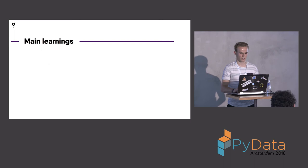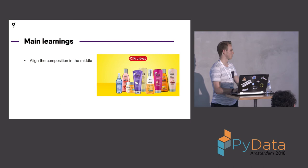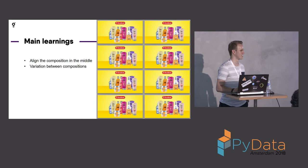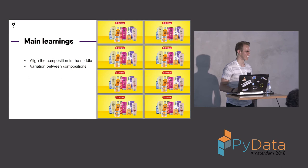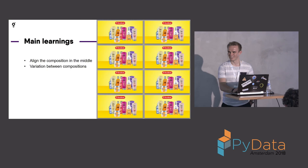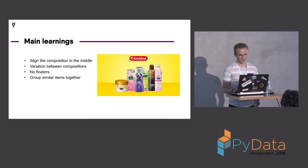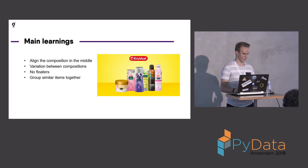The main learnings from designers: align the composition in the middle — one of the first compositions was clearly not in the middle. No floaters, so components can go flying. And similar items need to be grouped together, just like the two on the right that are actually the same shape. We used OpenCV to calculate shape similarities so that they are grouped together with a higher probability.